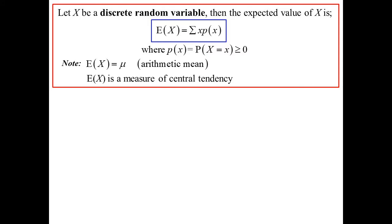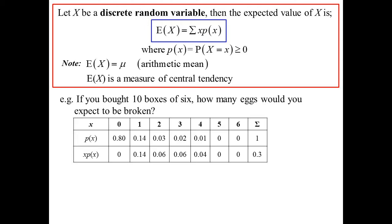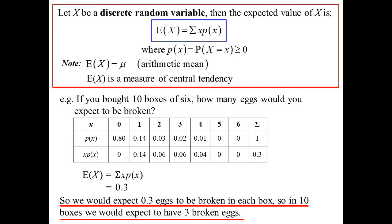Back to our eggs. If we're going to buy 10 boxes, how many broken eggs would we expect to have? I now add in that XPX column, sum them up. So we know on average there'll be 0.3 of a broken egg in a box. So if I was to buy 10 boxes, logically I'd expect three broken eggs. There's going to be 0.3 in each box.